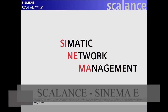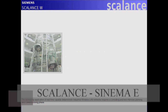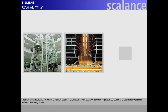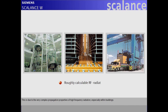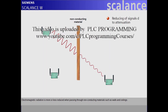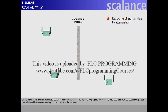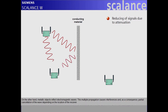The increasing application of real-time capable deterministic industrial wireless LAN networks requires a consulting and test-intensive planning and commissioning phase. This is due to the very complex propagation properties of high-frequency radiation, especially within buildings. Electromagnetic radiation is more or less reduced when passing through non-conducting materials such as walls and ceilings. On the other hand, metallic objects reflect electromagnetic waves. This multiple propagation causes interferences and, as a consequence, partial cancellation of the wave depending on the location of the receiver.